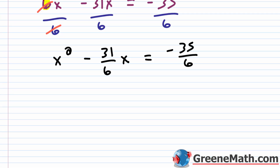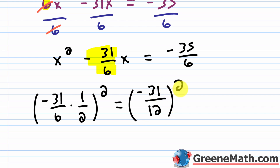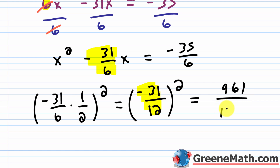Now complete the square: take the coefficient of x to the first power, which is −31/6, cut it in half by multiplying by 1/2, giving −31/12, then square it. That's (−31/12)² = 961/144. The value −31/12 — before squaring — is what you'll use when factoring into a binomial squared.